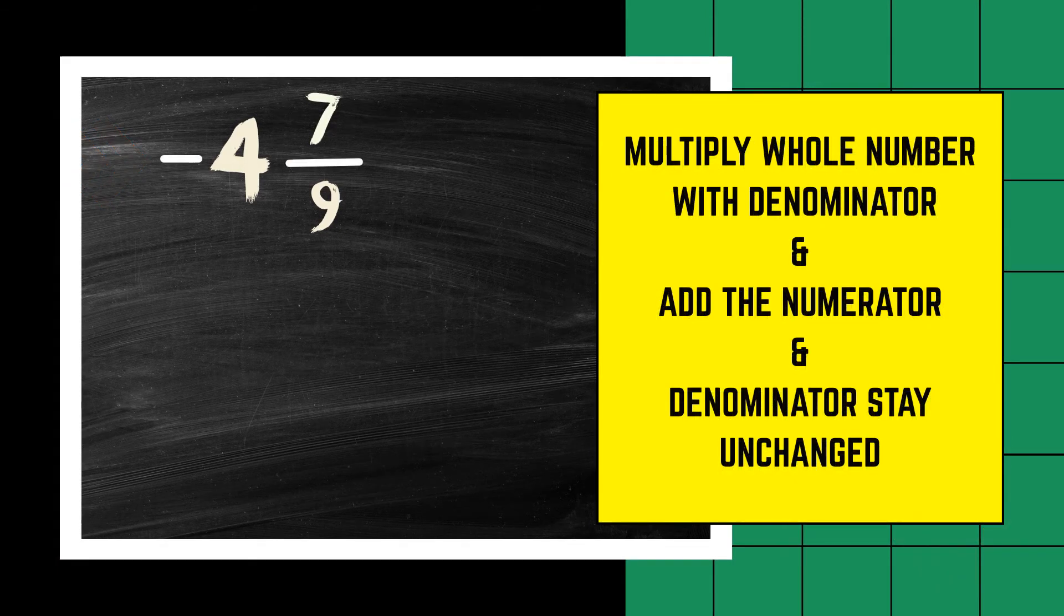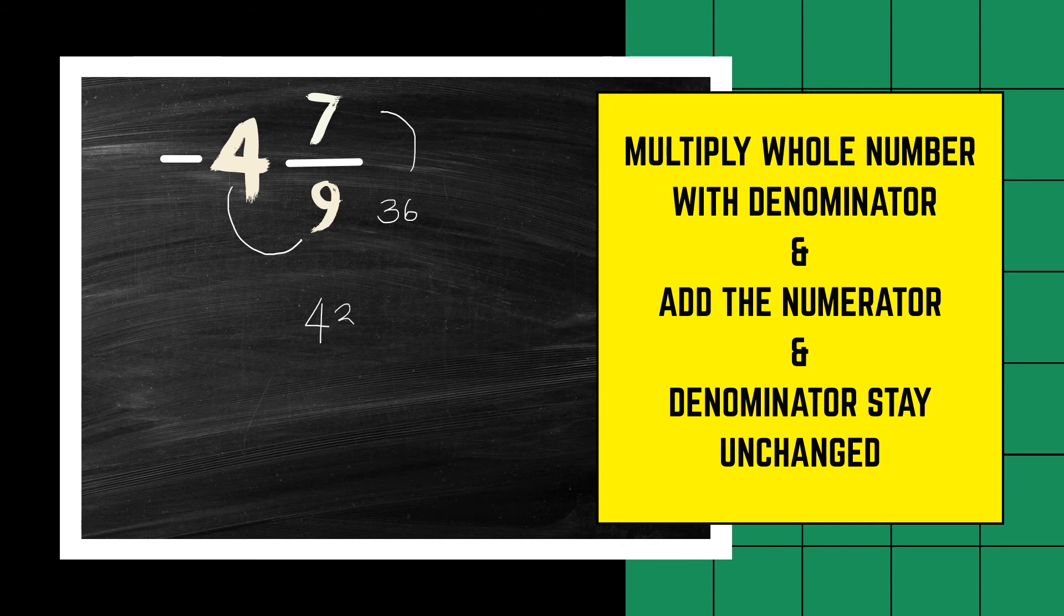Lucky last example. First hit pause and then see if you can get this one right. We start off by multiplying the whole number with the denominator. This would give us 36. Thereafter we add the 7. So the total value for the numerator would be 43. Our denominator needs to stay unchanged. And because this fraction started off as a negative value, we need to say the improper fraction of negative 4 and 7 over 9 is negative 43 over 9.